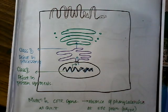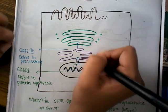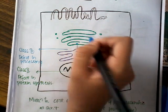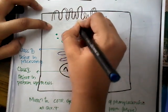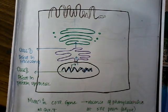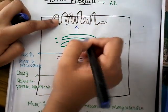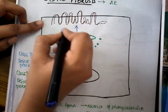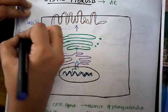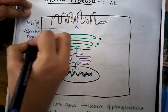If there is no Class 2 mutation, the protein reaches the Golgi apparatus, undergoes changes there, and the transformed protein should reach the outer cell surface receptor. When there is some problem in this process, it is called Class 3. In Class 3, there is defective regulation — the protein is not able to regulate properly.